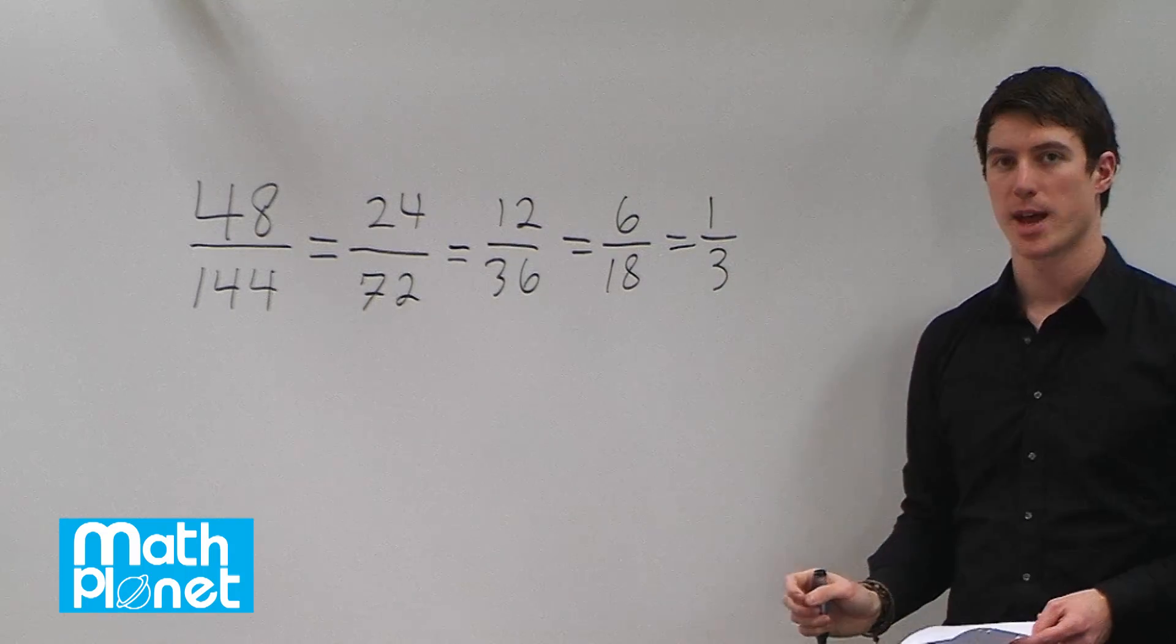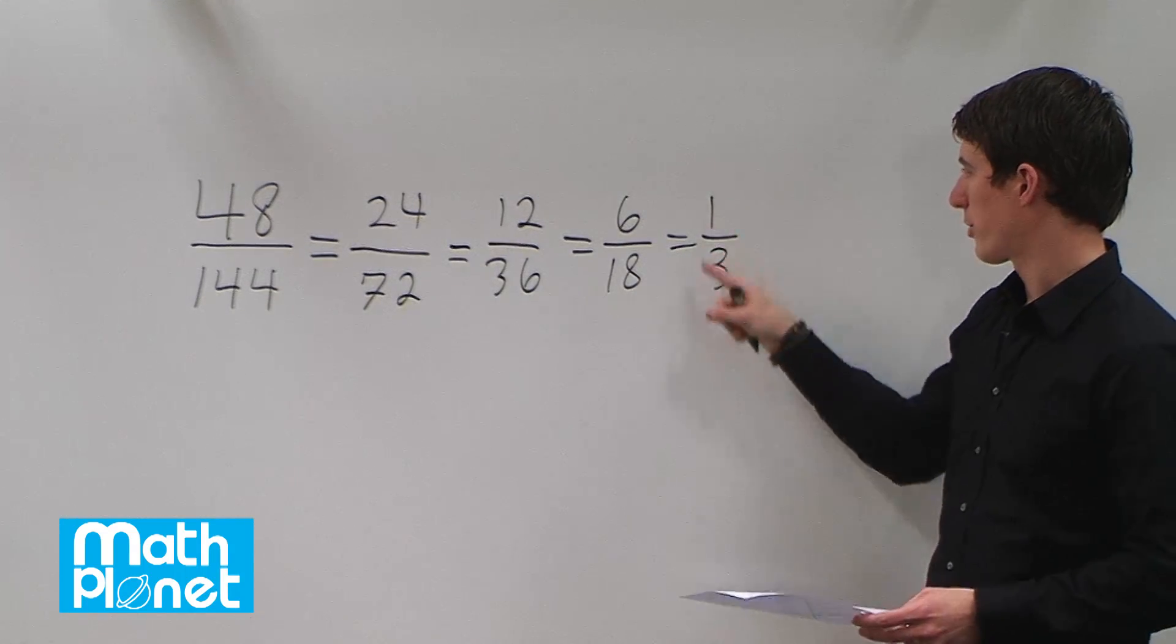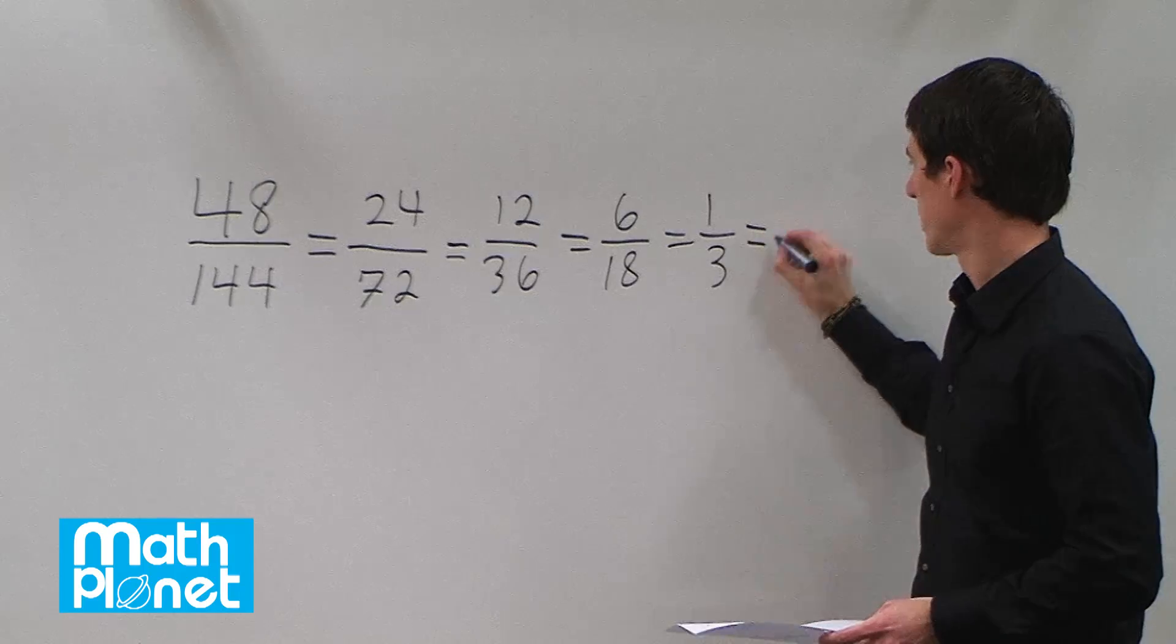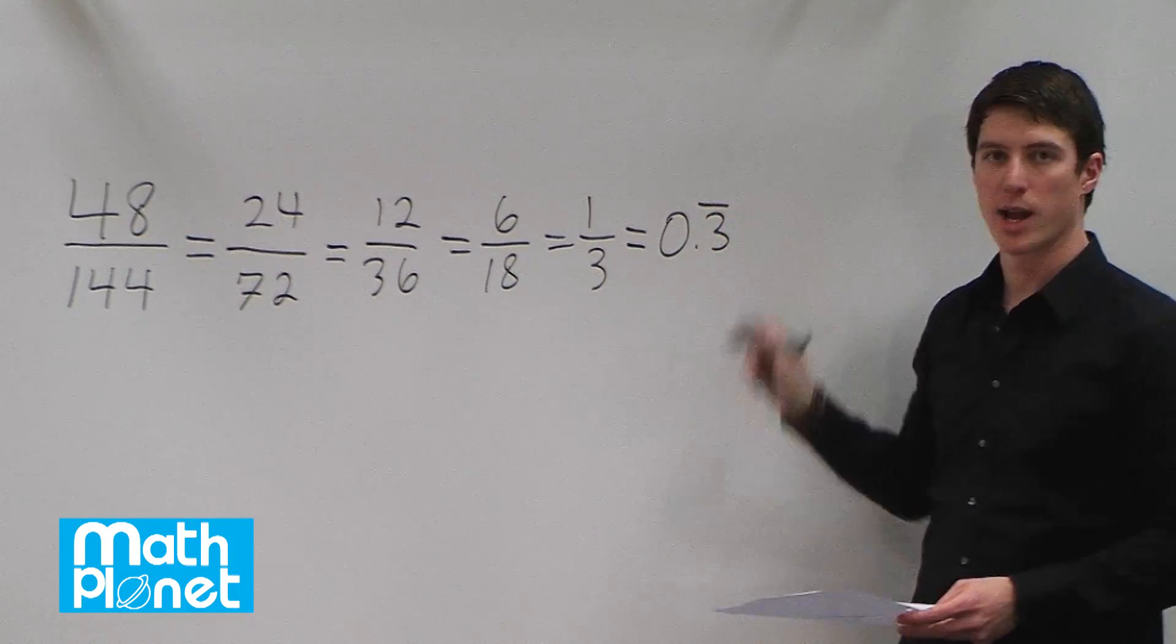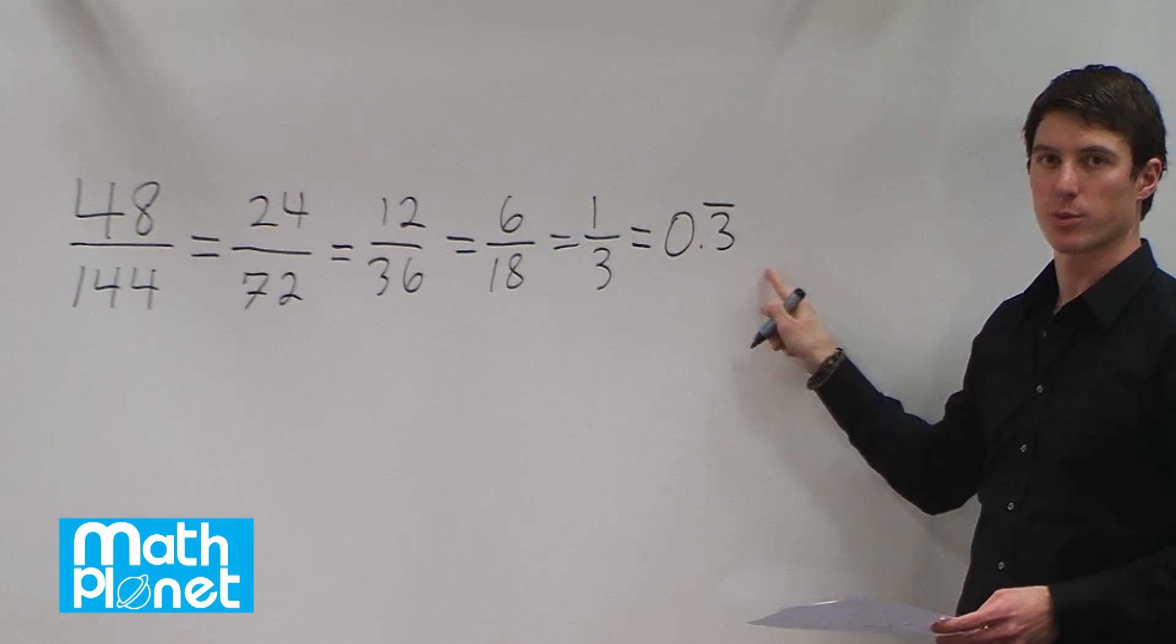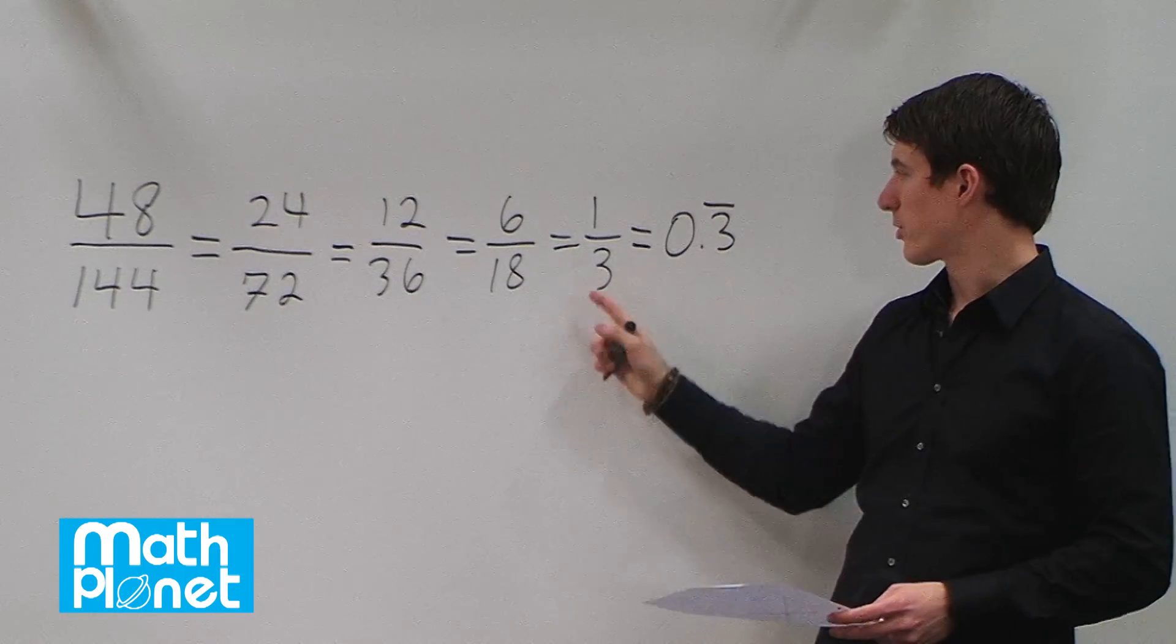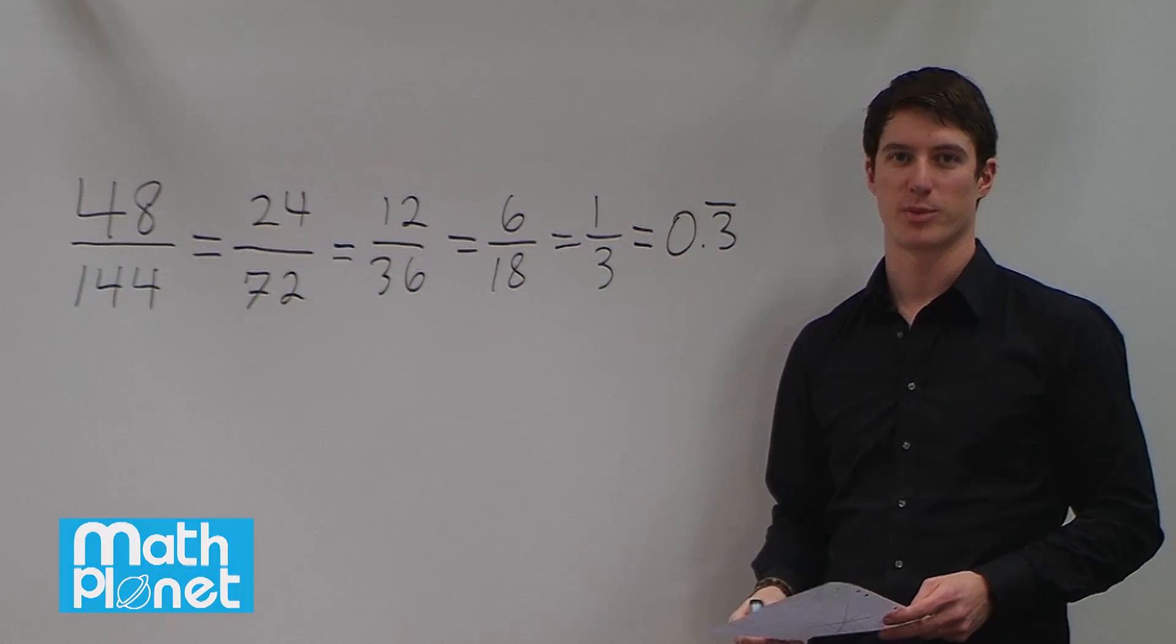We can write this exact same thing as a decimal as well. One-third is also equal to 0.3 repeating. Sometimes we write the line above it for repeating. This is 0.3333 forever. And so this and this are the same as 48 over 144.